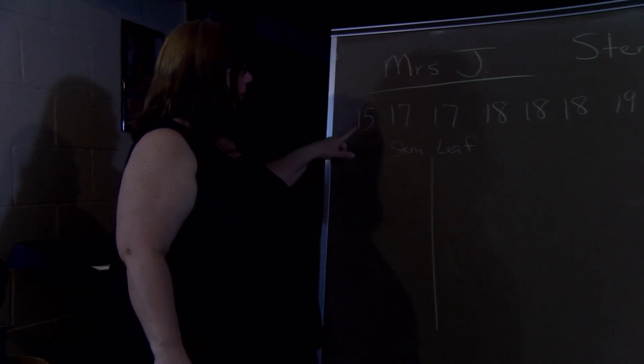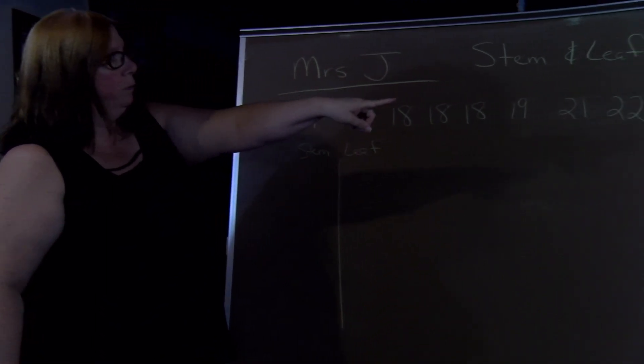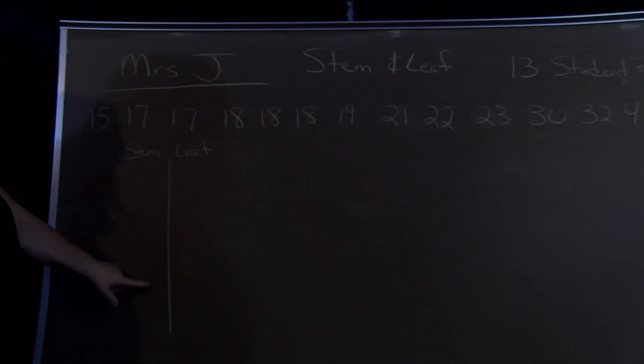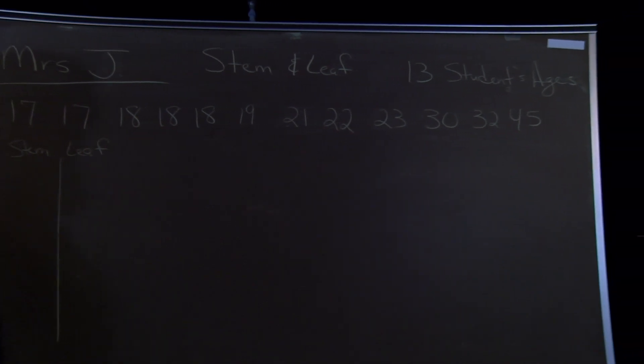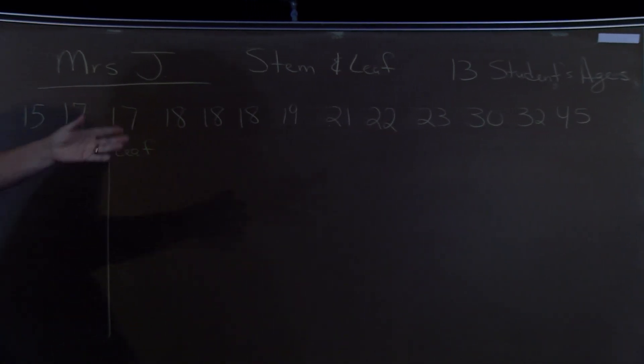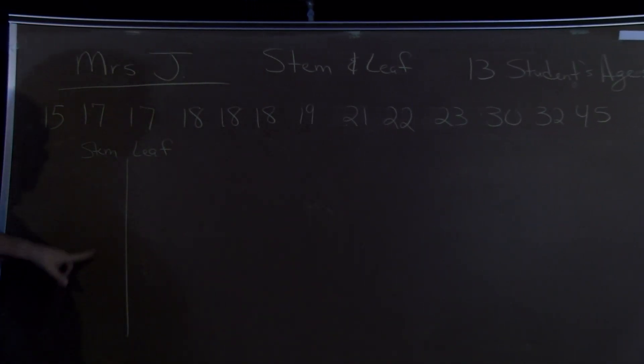So our numbers on our left are just one through four. And that's what you'd want to go here. Even if a number was skipped, for instance, if there were no 30 and 32, you still have to put the three here.